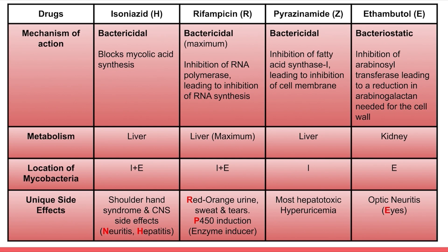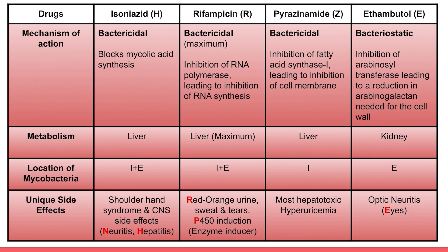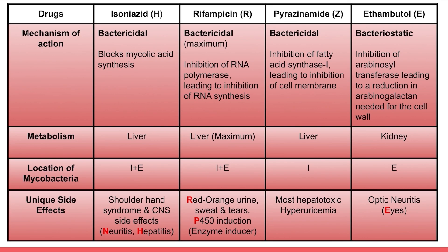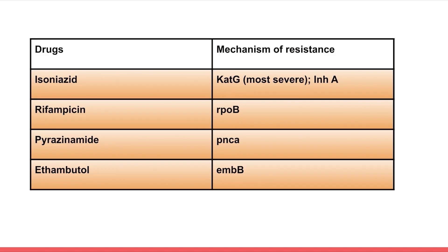Unique side effects are a very important and frequently asked section. For isoniazid: shoulder-hand syndrome and CNS side effects like neuritis, and hepatitis — remember INH where N stands for neuritis and H for hepatitis. For rifampicin: reddish-orange urine, sweat and tears — 'R' for reddish-orange — and it is a CYP450 enzyme inducer. Pyrazinamide is the most hepatotoxic and causes hyperuricemia. Ethambutol — 'E' for eyes — causes optic neuritis.